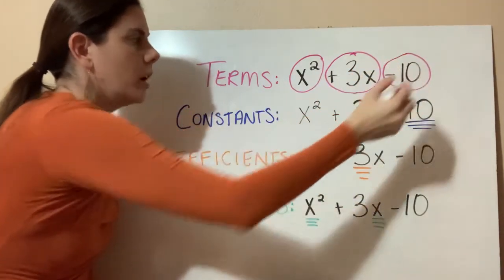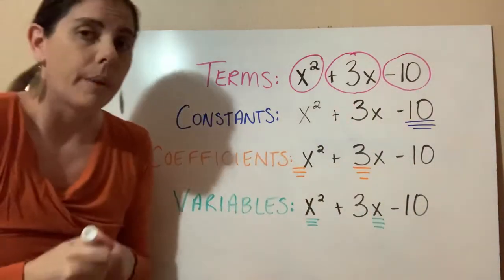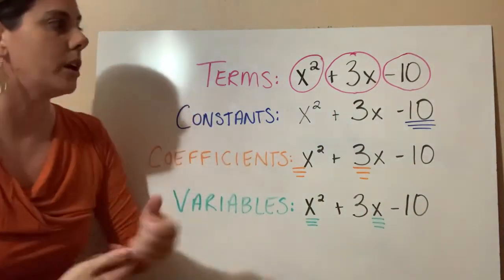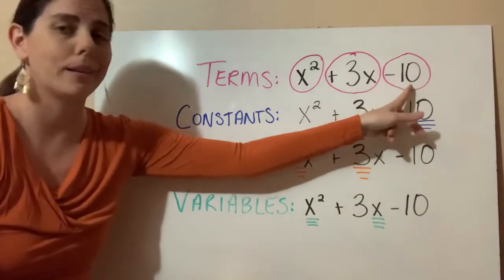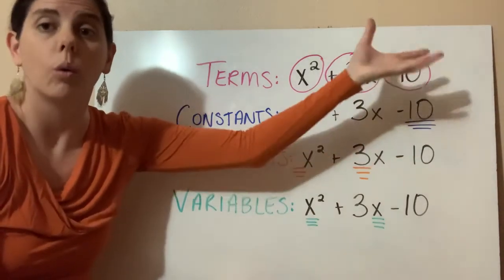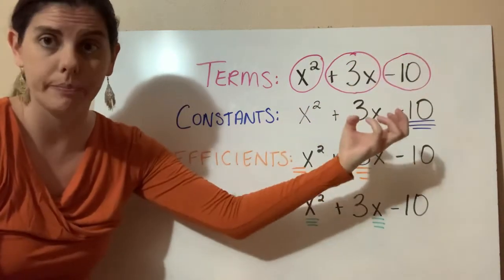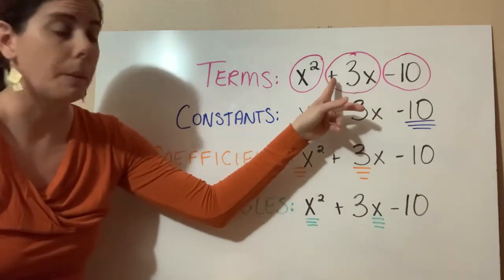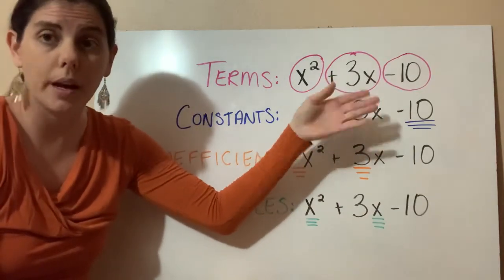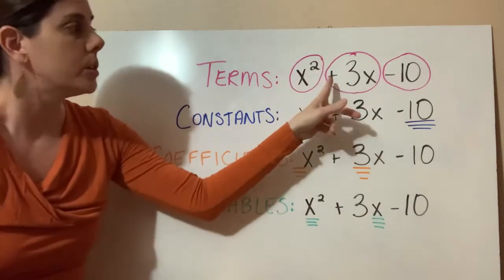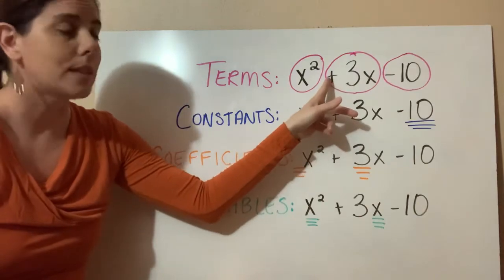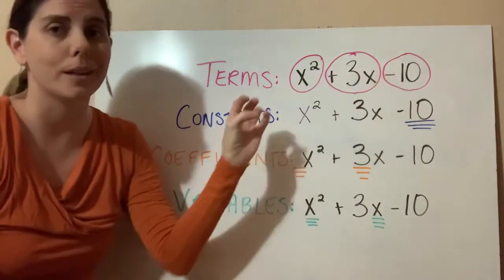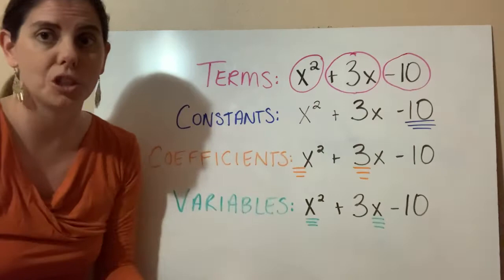We want to remember that in math, the sign that comes before the term is always associated with the term. So when we're circling our terms, include that sign right in with the number. Because later on, when we learn how to combine or add and subtract terms, we want to make sure that we understand that this is a negative 10 and that the 3x is a positive 3x. The sign that comes before the term is always going to stick with that term — it's attached to it.